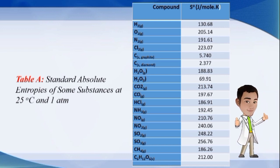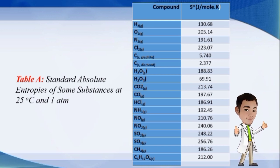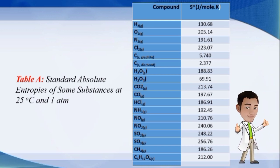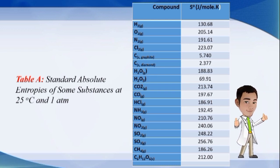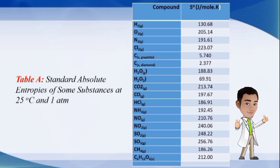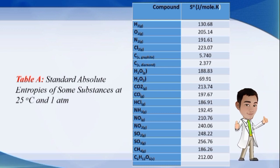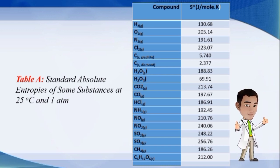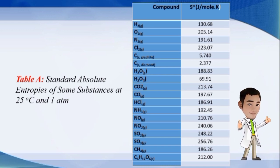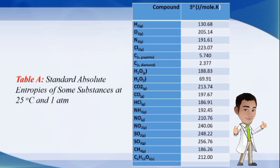The absolute entropy of a substance can be determined by the application of the third law of thermodynamics. According to this law, a perfect crystal has zero entropy at absolute zero, meaning the entropy change of a solid is equal to zero at zero Kelvin. This makes the entropy value of a substance at a given temperature an absolute value, equivalent to the entropy change for the substance when heated from absolute zero to the desired temperature, and has the unit J per mol·Kelvin.